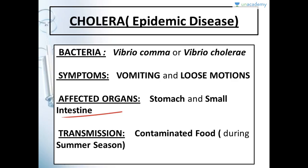Cholera is transmitted via contaminated food during summer season. During summer, when contaminated food is eaten, this disease occurs. The bacteria multiplies very fast in summer. That's why we keep eatables in the refrigerator — in colder temperatures, bacteria cannot multiply easily. But in warm summer temperatures of 40 to 45 degrees, it is very suitable for bacteria to multiply.